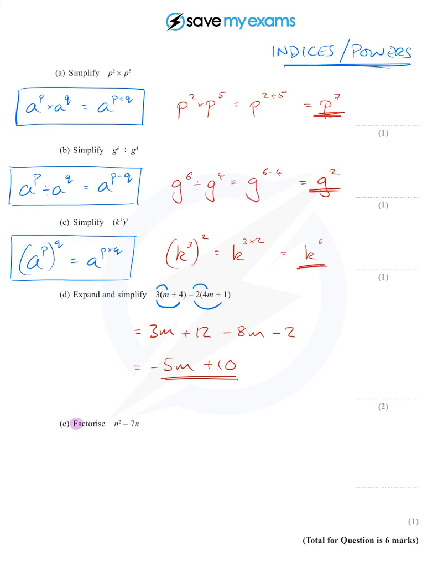And finally they are asking me to factorize. Now you will notice that this is in fact a quadratic. There's an n squared and an n, but there's no number term, so this is a two term quadratic and in fact simple factorization is what we're after here. The first term is n times n, the second term is seven times n, and you can spot the common factor. There's an n in each term, so we take the n out of the bracket and write down whatever's left: that's n minus seven.